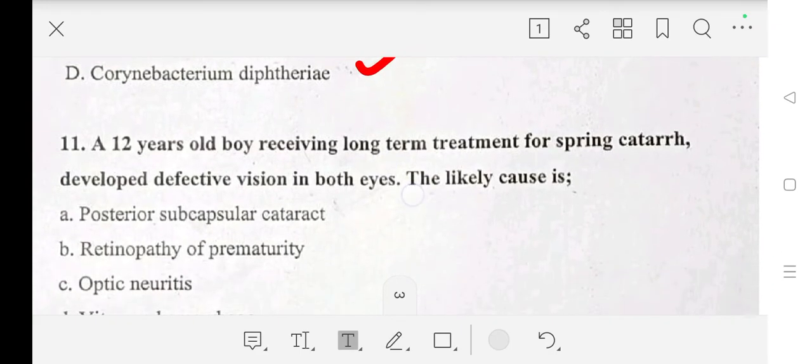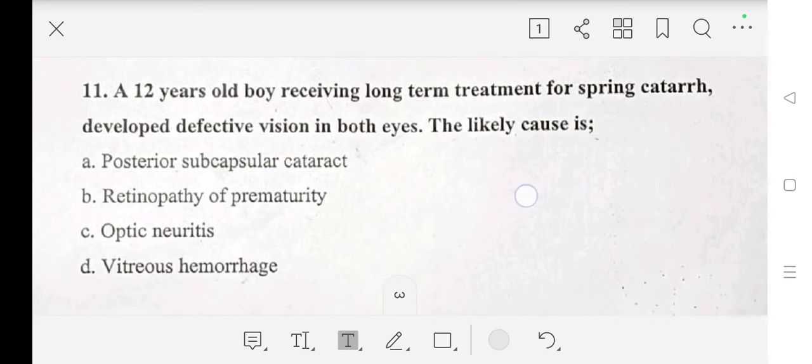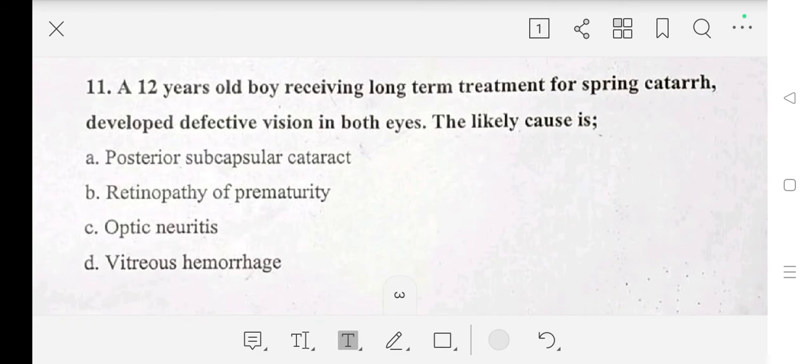Question number eleven: a 12-year-old boy receiving long-term treatment for spring catarrh developed defective vision in both eyes. The likely cause is posterior subcapsular cataract, retinopathy of prematurity, optic neuritis, or vitreous hemorrhage? Answer is posterior subcapsular cataract.